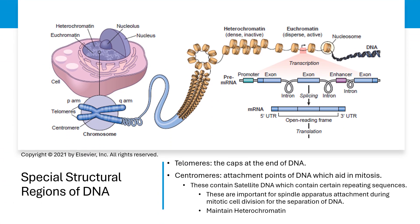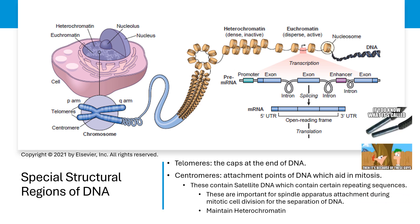Special structural regions of DNA include telomeres and centromeres. Think of telomeres as the protective caps at the ends of our DNA — just like the aglet, the plastic tip at the end of a shoelace that keeps it from fraying, telomeres protect our DNA from damage. Centromeres are like glue that holds our DNA together; they are attachment points on DNA that help during cell division, specifically mitosis. Centromeres contain satellite DNA with certain repeating sequences, important for spindle apparatus attachment during mitotic cell division. Centromeres also help maintain heterochromatin, which is a tightly packed form of DNA important for regulating gene expression and maintaining chromosome structure.